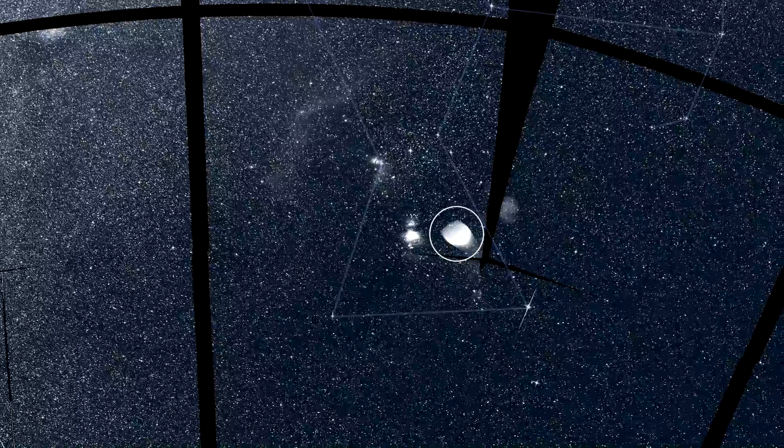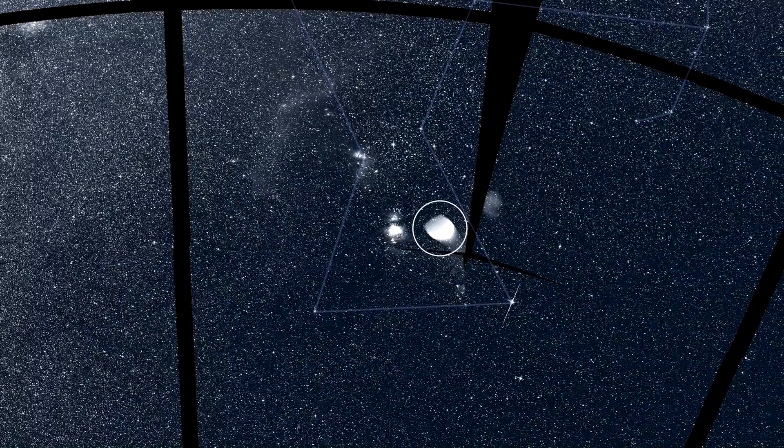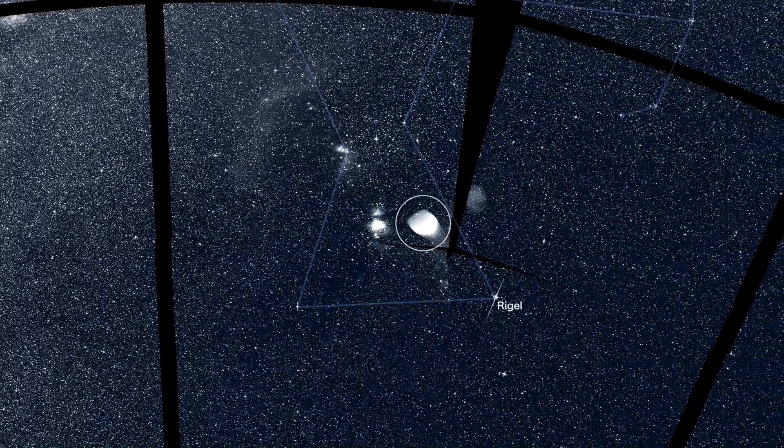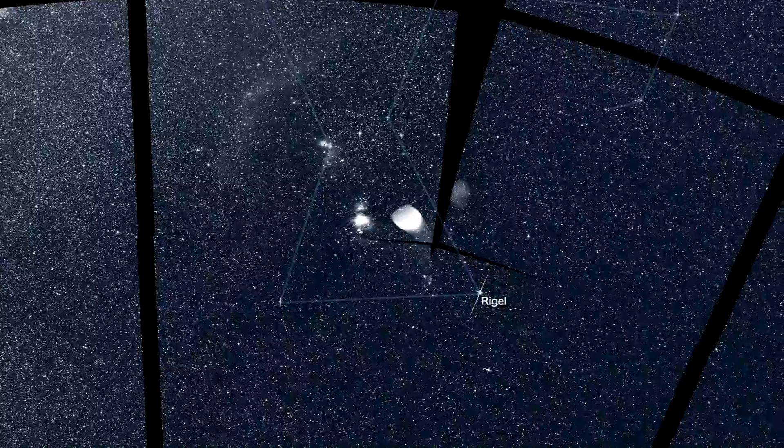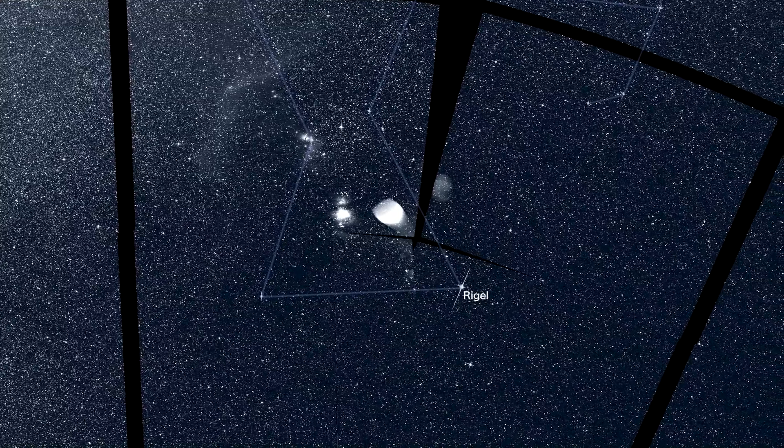This isn't a cosmic object at all. It's actually a reflection of Rigel, the bright star marking one of Orion's feet, and it's caused by light scattering off part of the camera system.